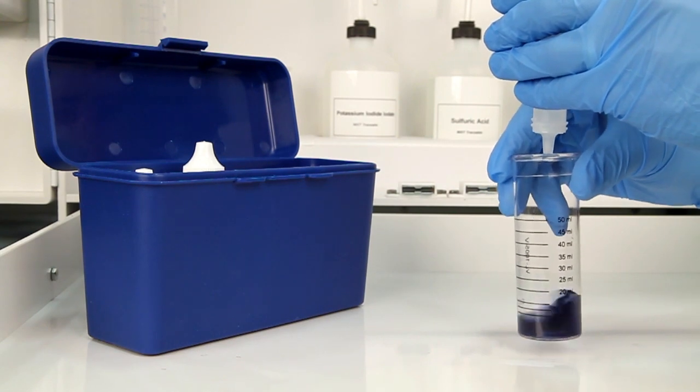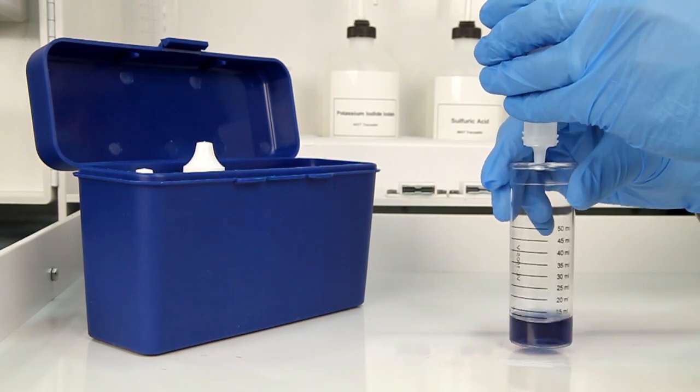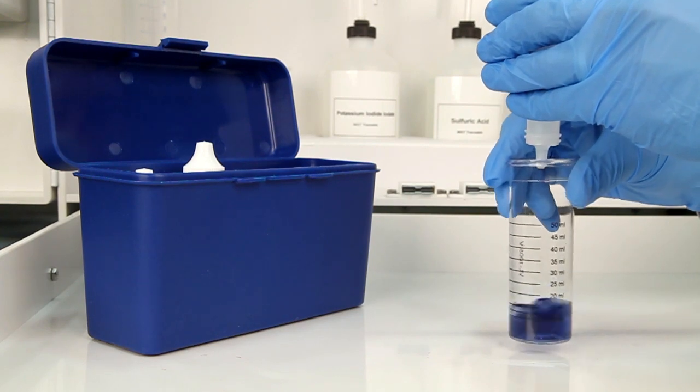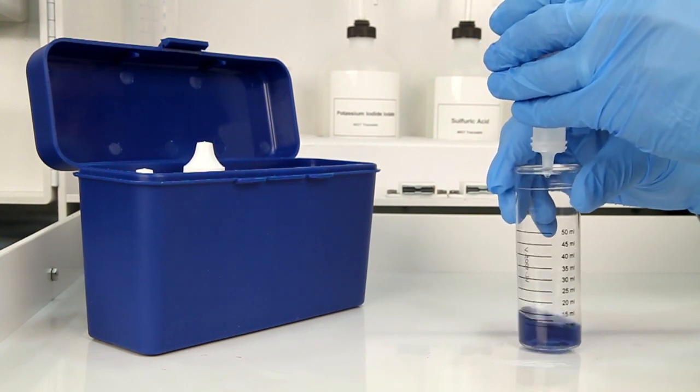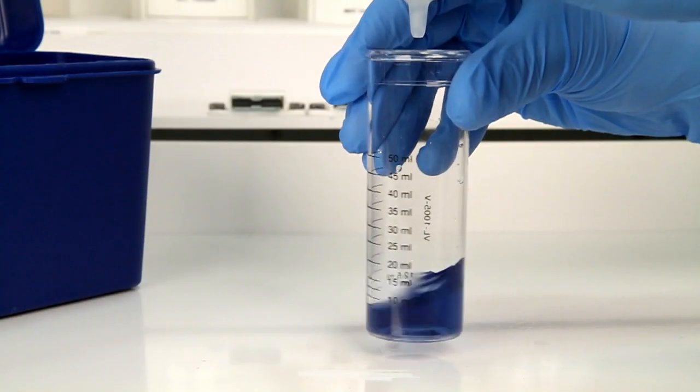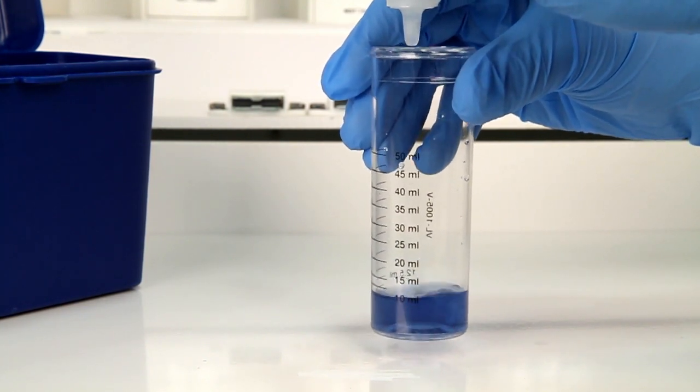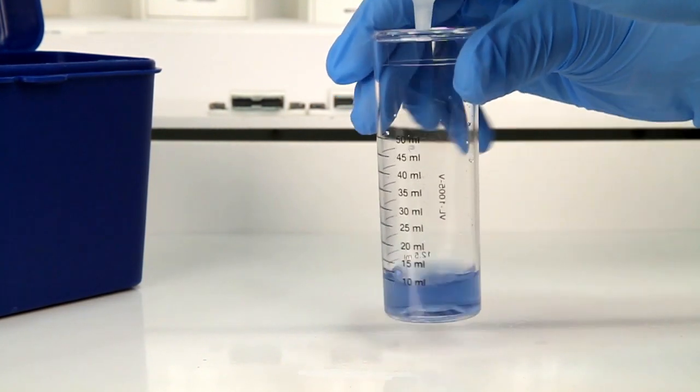Add the titrant one drop at a time, swirling the vial after each drop to properly mix the sample. You must count the number of drops during this step. The bottle contains a dropper tip, so it's important to hold the bottle vertically to get a consistent drop size.